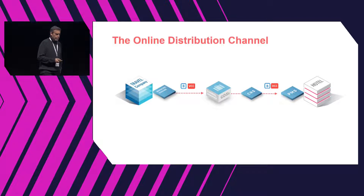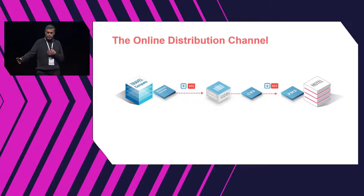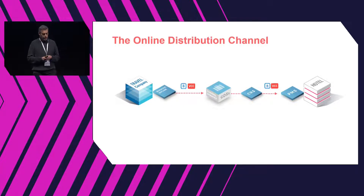When we talk about B2B payments, we talk about payments that happen along the online distribution channel. You have travel companies at one end and hoteliers at the other. Those travel companies send their bookings to hoteliers together with a credit card through technology components called GDSs and channel managers, which send the booking to the hotel's central reservation system — the CRS — and from there the booking and the credit card travel to the PMS.